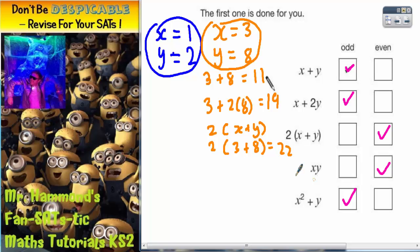The fourth statement, we've got x times by y. Remember the invisible times sign. So we've got 3 times by 8, which is 24. Again, this is still even.